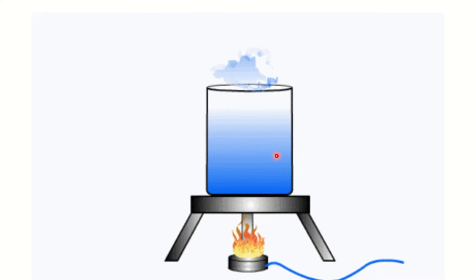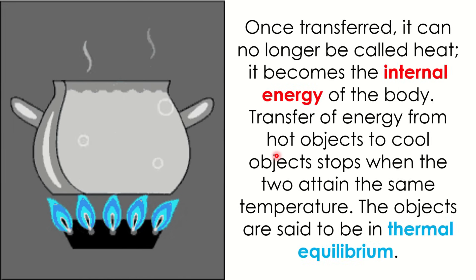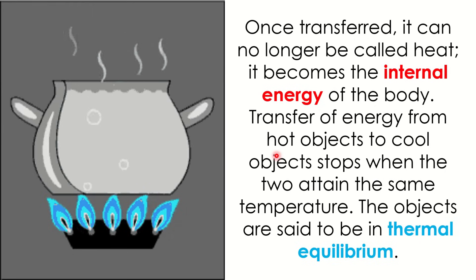Whenever there is a temperature change, heat transfer takes place. It is the transfer of energy from a high-temperature object to a low-temperature object. An example of heat transfer is boiling of water — the hot stove heats the pot, and the pot heats the water inside. Once transferred, it can no longer be called heat; it becomes the internal energy of the body. Transfer of energy from hot objects to cool objects stops when the two attain the same temperature — the objects are said to be in thermal equilibrium. Many processes involve heat transfer, and it is hard to imagine a situation where no heat transfer occurs.